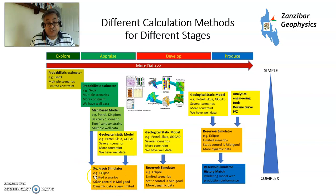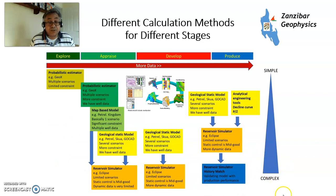During development, you're in the Petrel-Eclipse stage, building an integrated geological model. Once you have production, you can history-match — you have real production data which you use to alter your model to fit it, always alter the model, not the data, to ensure you understand what's going on. These full simulation methods are complex and take weeks or months to build a fully history-matched reservoir model, whereas the simpler volumetric methods can be done in days. The further along the exploration-production cycle you are, the more complex your models become, because the more valuable the decisions you need to make.